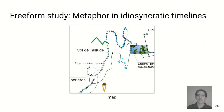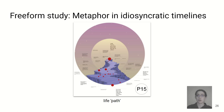In contrast, P15 also chose a path, but in this case a purely metaphorical life path. They visualized the events of the fictional biography of Forrest Gump, overlaying them on a figurative path image in the background.